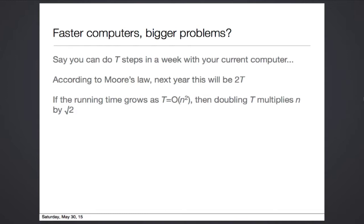then doubling t, i.e. what your computer will be able to do next year, multiplies the size of the problem you can solve by the square root of 2, or around 1.4. This means that simply by waiting for computers to get faster, you could solve a problem that is 40% larger than the problem you could solve today.